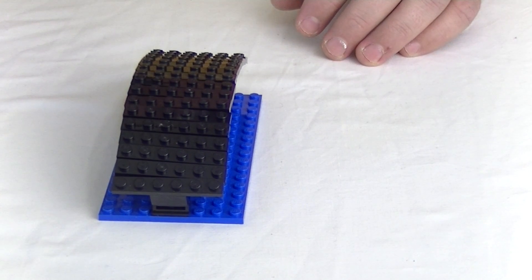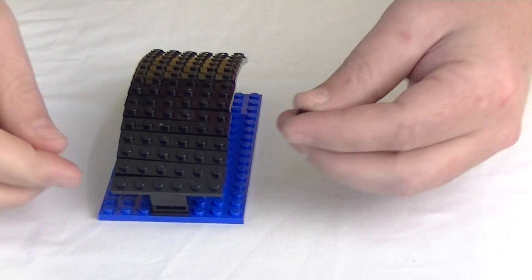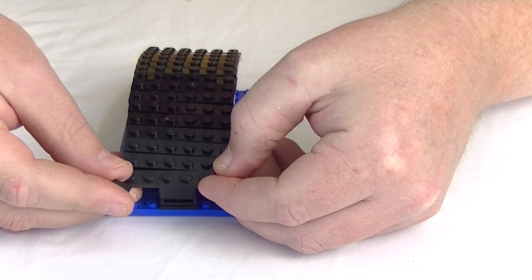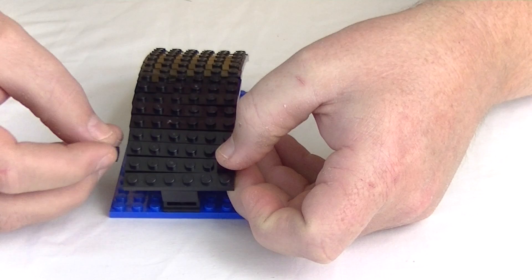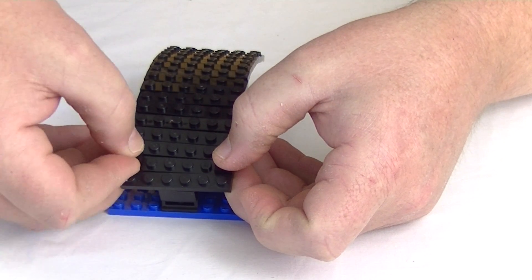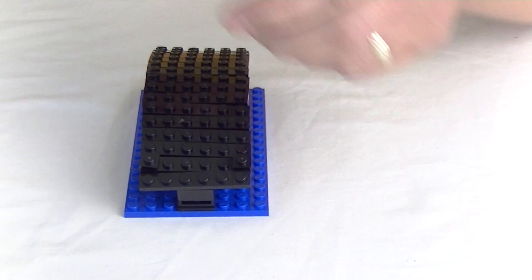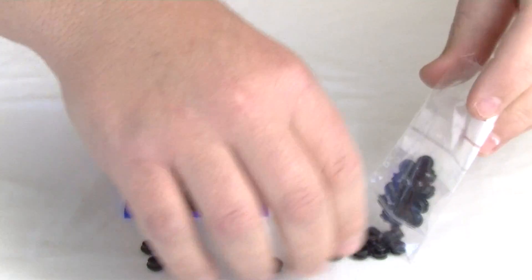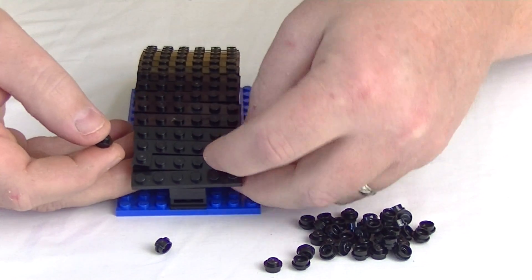So now we're going to put these little plates. So I'm going to start on the second one on each side like that. And we're also going to put a one by one round black stud on there as well. So put that on there like that.